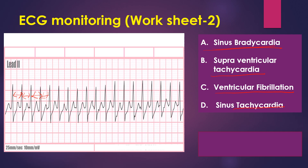It is not ventricular fibrillation, because as I told you, fibrillation means irregular waves where you cannot see a proper QRS complex or P wave. Now, is it sinus tachycardia? Do you have a proper P wave? No, we don't have a proper P wave at all. So it is not sinus tachycardia.